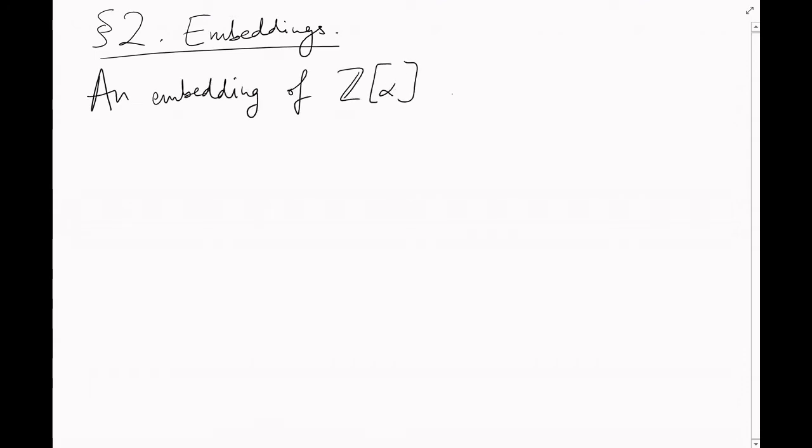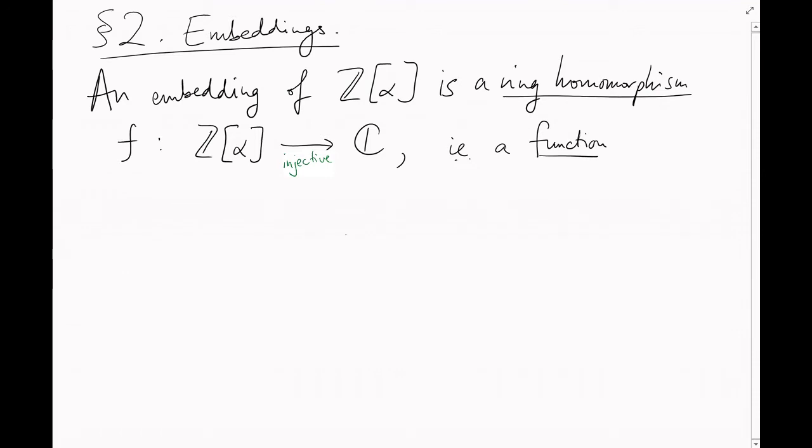An embedding of, say, Z adjoin alpha is an injective ring homomorphism f from Z adjoin alpha to the complex numbers. If you know what that means, put your feet up for a couple of minutes. If you don't, here's the point. Firstly, f is a function. You input an element of Z alpha, and it outputs a complex number.